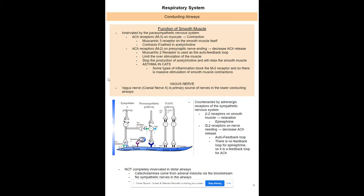Issues with M2 receptors are common when inflammation blocks them from reabsorbing acetylcholine, resulting in over-stimulation and excessive bronchospasms — smooth muscle contractions. This is especially seen in asthma in cats, where the M2 receptor can be a significant problem. All of this is stimulated by your vagus nerve, which is a parasympathetic pathway.